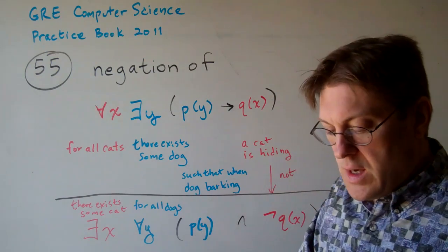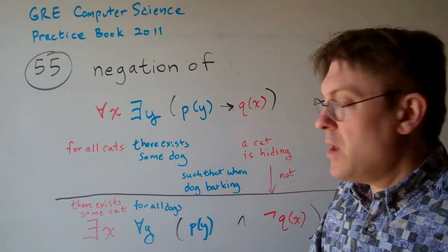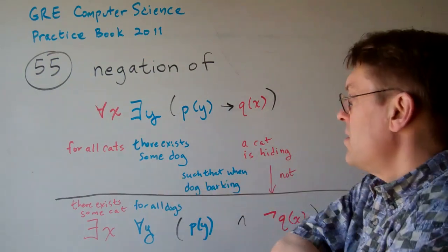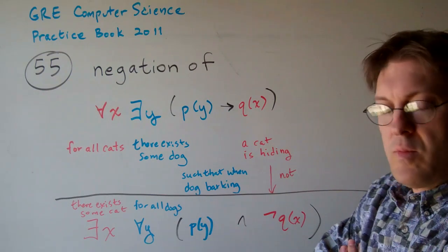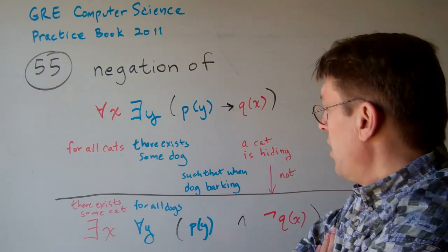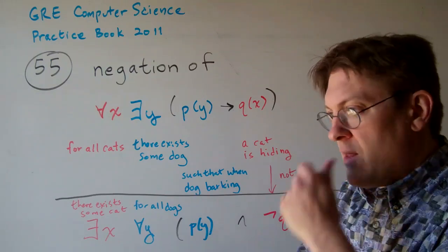Okay, so then the question is how do we negate that? If for all cats there's some dog where whenever the cat's hiding there's a dog barking, all we need to do is kind of reverse the meaning of that.